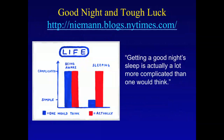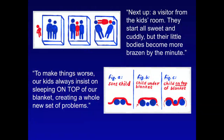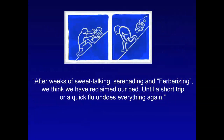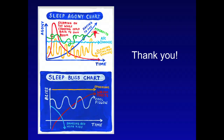I'll end with a blog from the New York Times called 'Good Night and Tough Luck,' by a writer who says getting a good night's sleep is actually a lot more complicated than one would think. This person must have children because it's exactly my life. 'Next up, a visitor from the kids' room — they start all sweet and cuddly, but their little bodies become more brazen by the minute. To make things worse, our kids almost always insist on sleeping on top of our blanket. After weeks of sweet-talking and serenading, we think we have reclaimed our bed until a quick flu undoes everything again.' We think we have at least some preliminary strategies to work on this. Thank you.